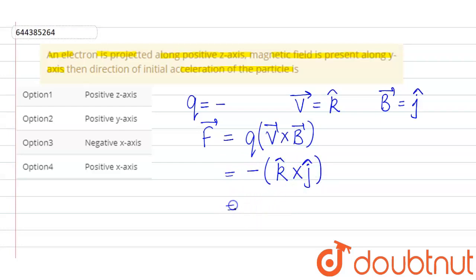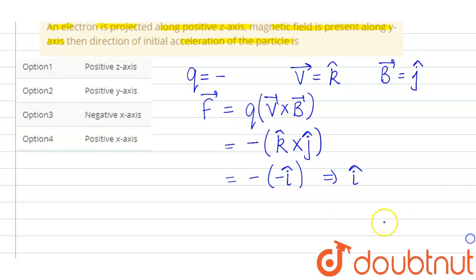Now, k cross j is minus i, so it comes out to be i-cap. That means the direction of force is i-cap.